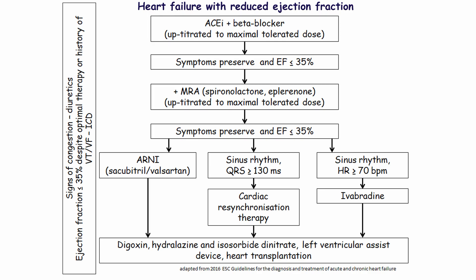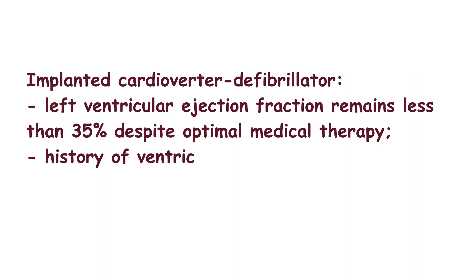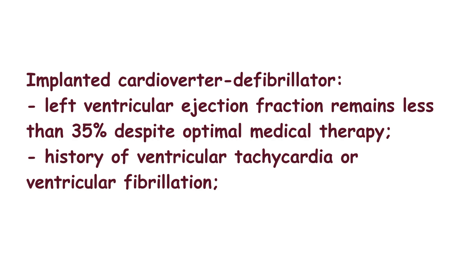If the patient's heart rate exceeds 70 beats per minute, ivabradine should be added to keep heart rate below 70 beats per minute. If the patient presents with sinus rhythm and QRS duration is more than 130 ms, the need for cardiac resynchronization therapy should be considered. Diuretics should be used to improve symptoms and signs of congestion. If symptoms persist despite all these measures, digoxin and hydralazine with isosorbide dinitrate should be considered. The last-line therapy involves left ventricular assist devices and heart transplantation. Note that thiazolidinediones and nonsteroidal anti-inflammatory drugs may deteriorate heart failure. If left ventricular ejection fraction remains less than 35% despite optimal medical therapy, or the patient has a history of ventricular tachycardia or ventricular fibrillation, or in the case of myocardial infarction at least 40 days after the acute event, a cardioverter-defibrillator is implanted.